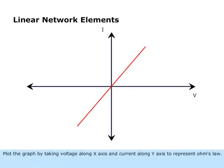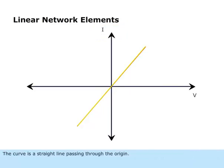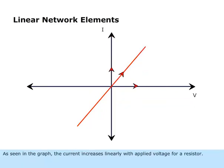Plot the graph by taking voltage along the x-axis and current along the y-axis to represent Ohm's law. The curve is a straight line passing through the origin. As seen in the graph, the current increases linearly with applied voltage for a resistor.